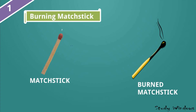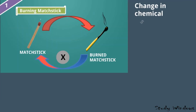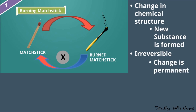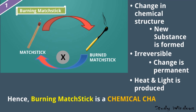This match stick changes into a burnt match stick by chemical reaction, but we cannot make the burnt match stick back into a normal match stick. So we have seen here: change in chemical structure, new substance is formed, it is irreversible, we cannot get back the original substance, the change is permanent, and heat and light are produced. Hence burning a match stick is a chemical change.